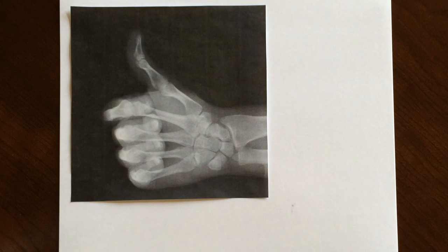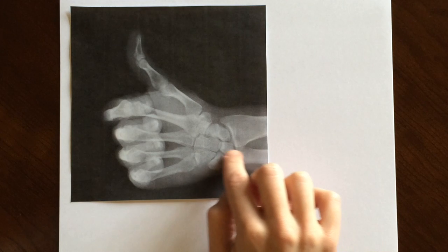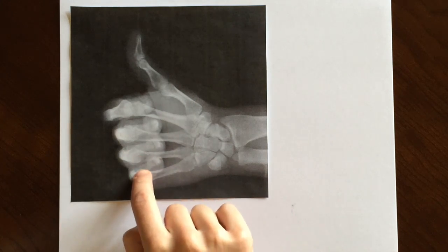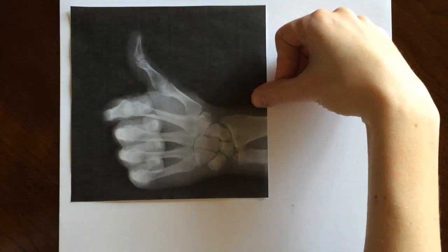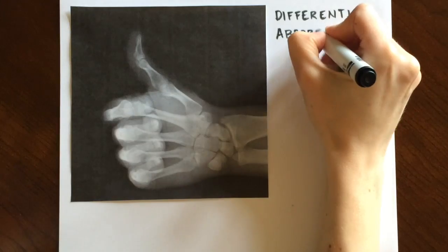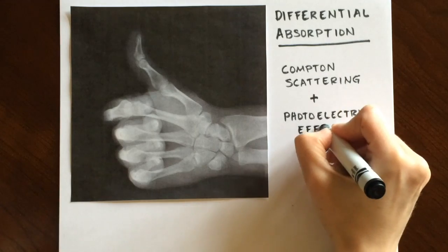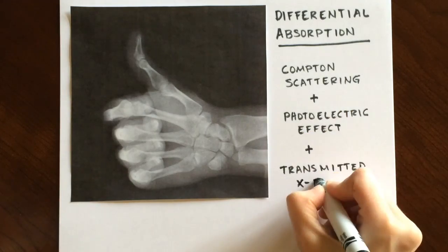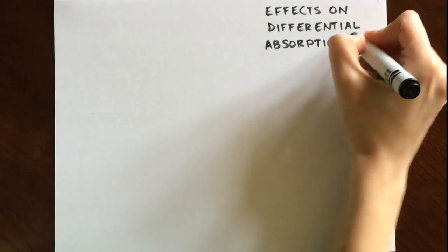In order to image bony structures in detail, you need to be able to see both the bones and the surrounding soft tissue. Those x-rays that undergo photoelectric absorption within the bone allow for light areas on the film, and those that pass straight through to the image receptor allow for the dark areas on the film. The difference in these x-ray interactions is called differential absorption and is the sum of Compton scattering, photoelectric effect, and transmitted x-rays. A high-quality radiograph will have maximum differential absorption.